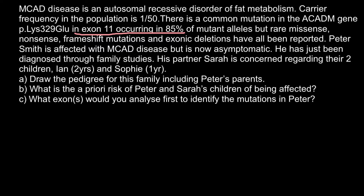Question A: Draw the pedigree for this family including Peter's parents. Here is his mother, his father, and here is Peter. Because we know Peter is affected, his genotype is homozygous recessive (small a, small a), since this is an autosomal recessive genetic disorder.